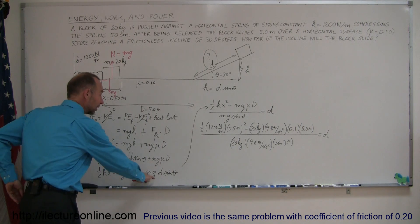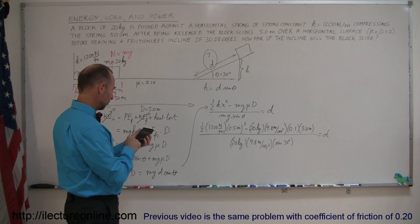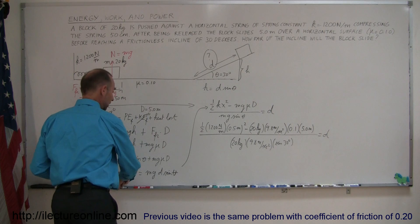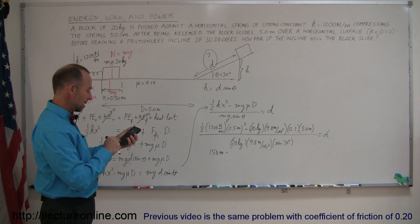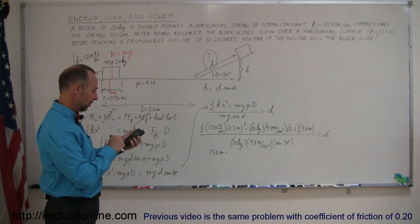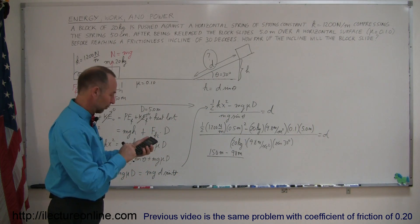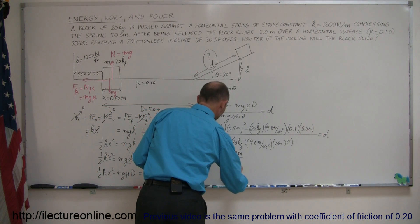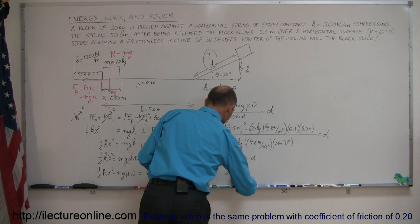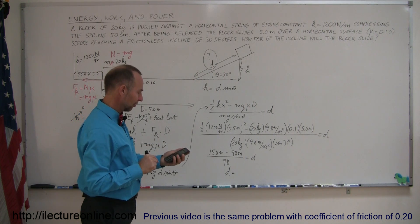Let's calculate — never be too far from a calculator when you do physics problems. One-half times 1,200 times 0.5 squared equals 150. Then 20 times 9.8 times 0.1 times 5 equals 98. The denominator is 20 times 9.8 times 0.5 (since sine of 30 is 0.5), which also equals 98. So d equals (150 minus 98) divided by 98, and we get d equals 0.53 meters.